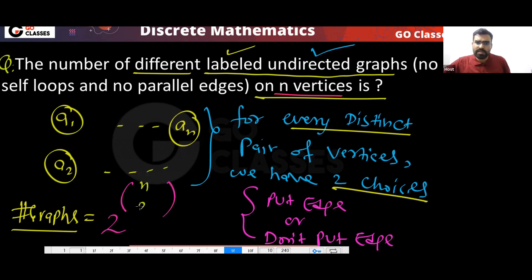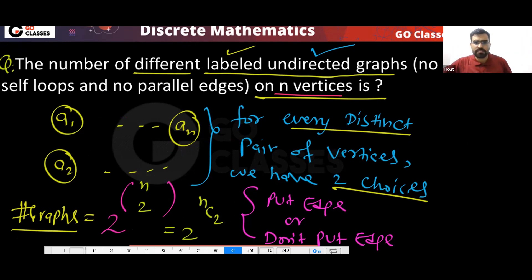So the answer will be 2 power nC2, because for every possible edge you have two choices. Is this clear? Anyone has any doubt in this?